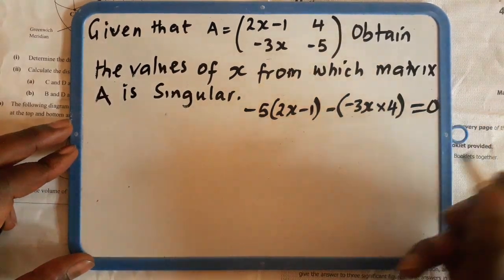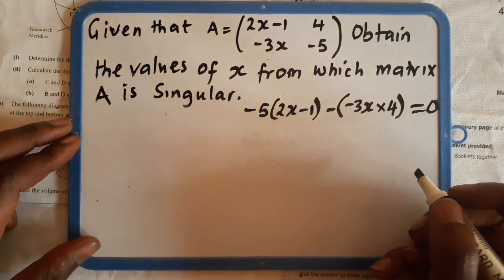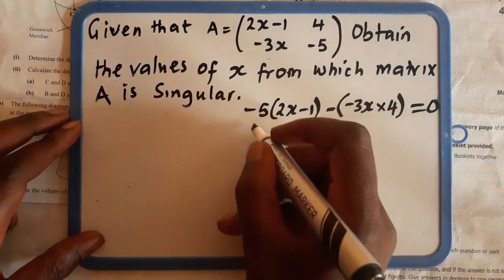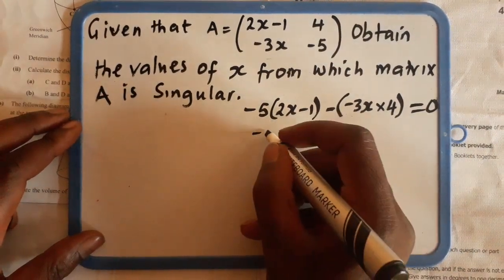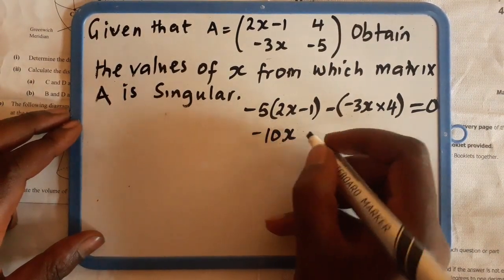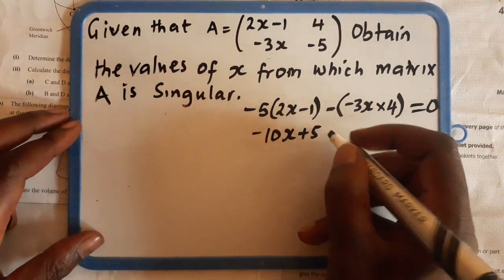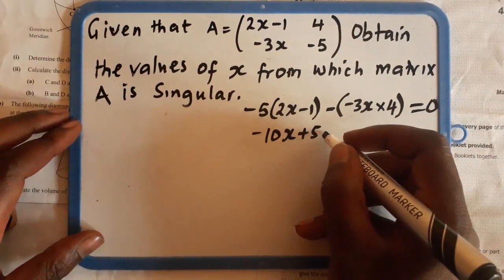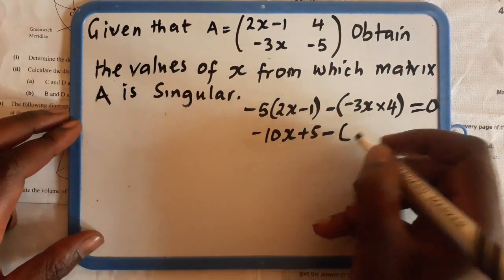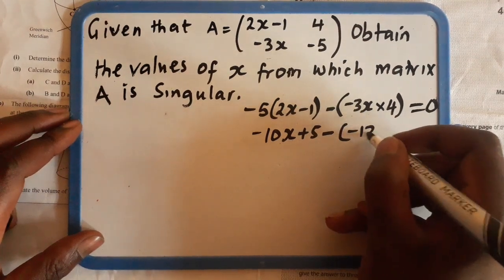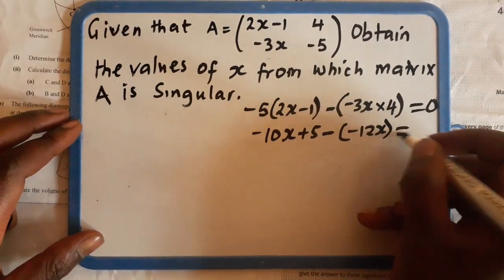This has to be equated to 0 because the determinant of a singular matrix is 0. So we distribute here, we're going to have negative 10X plus 5. This is going to give us negative 12X equals 0.